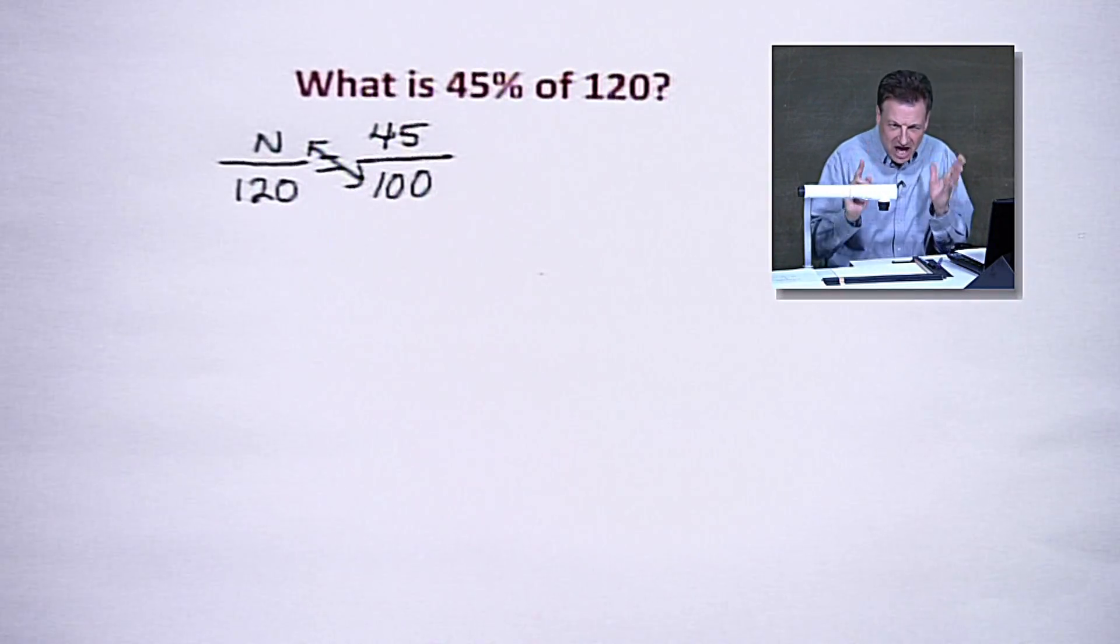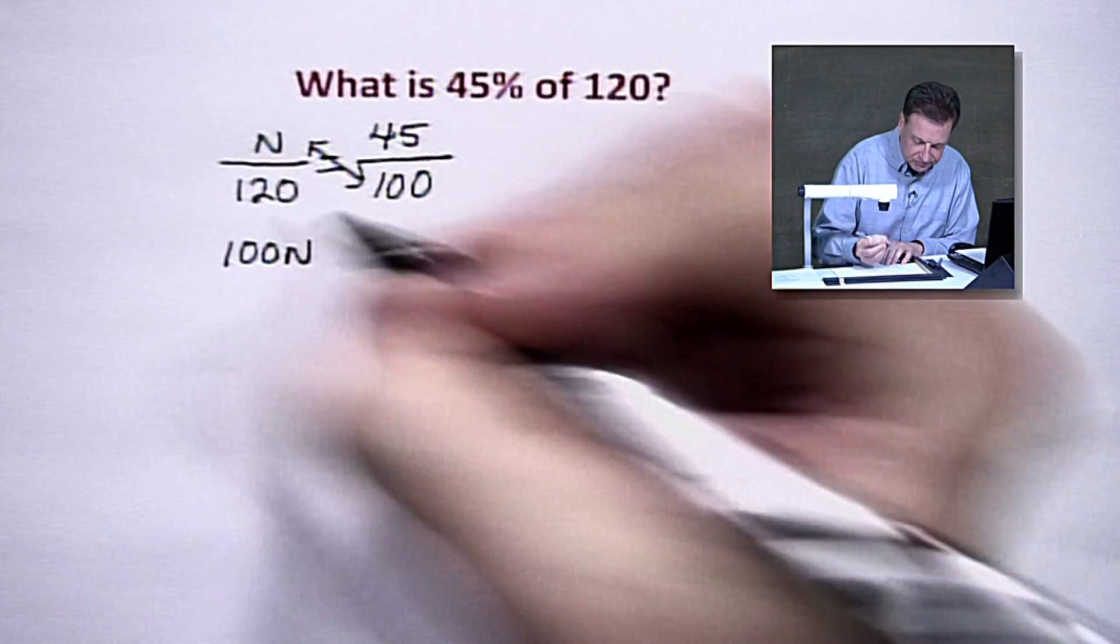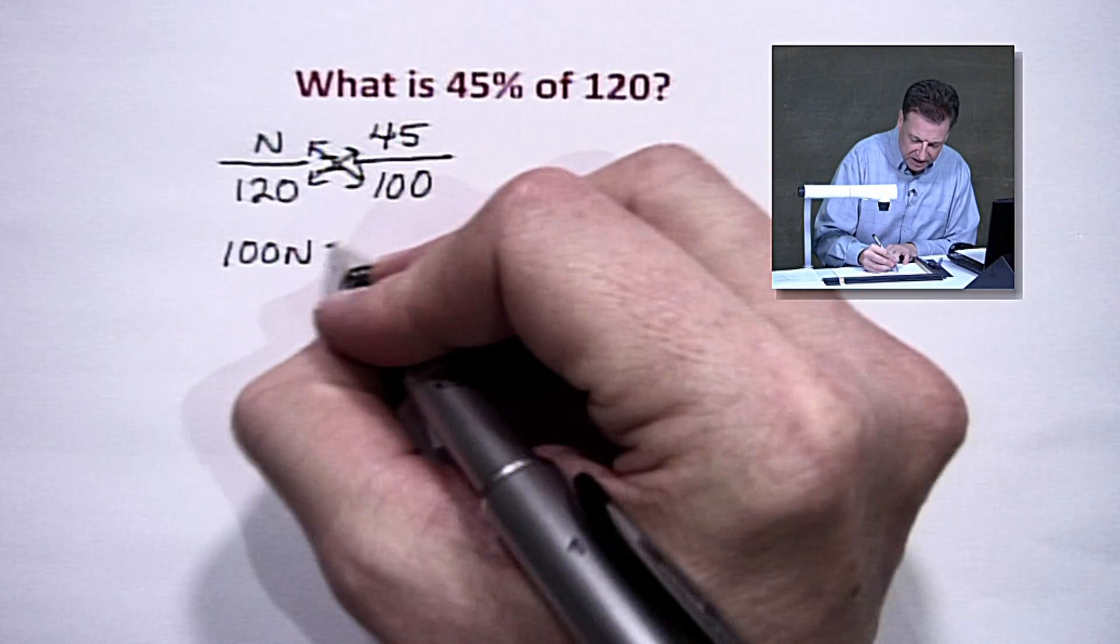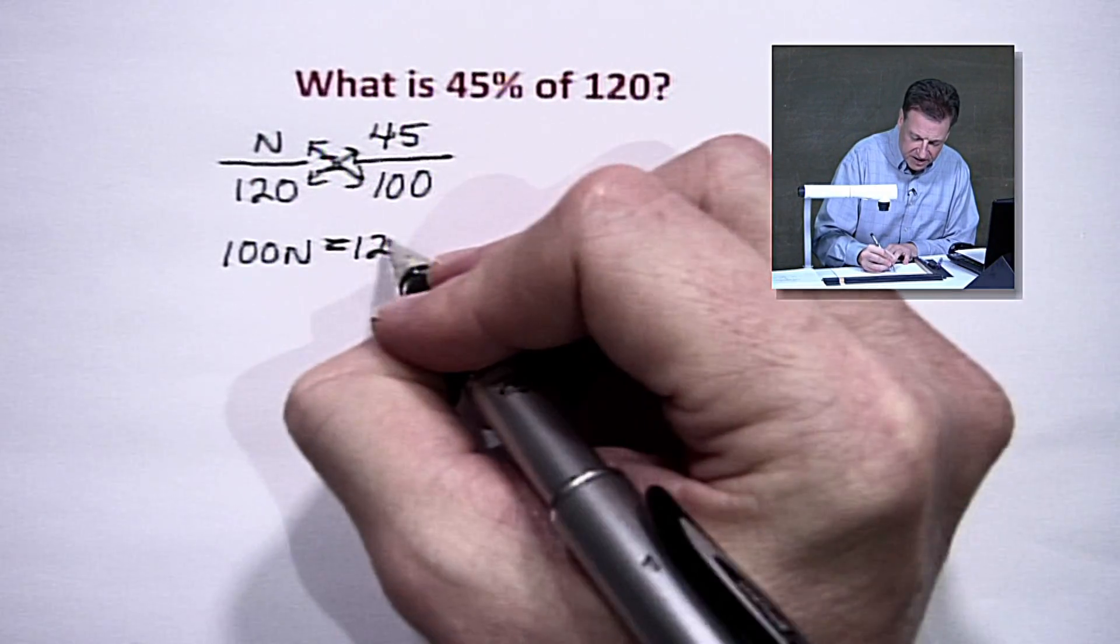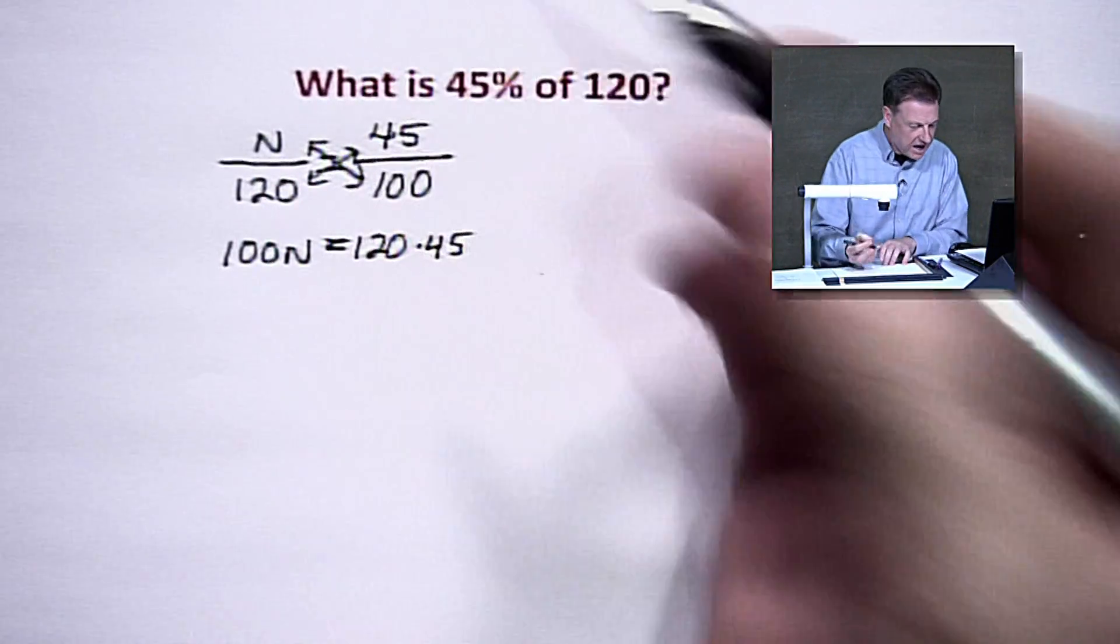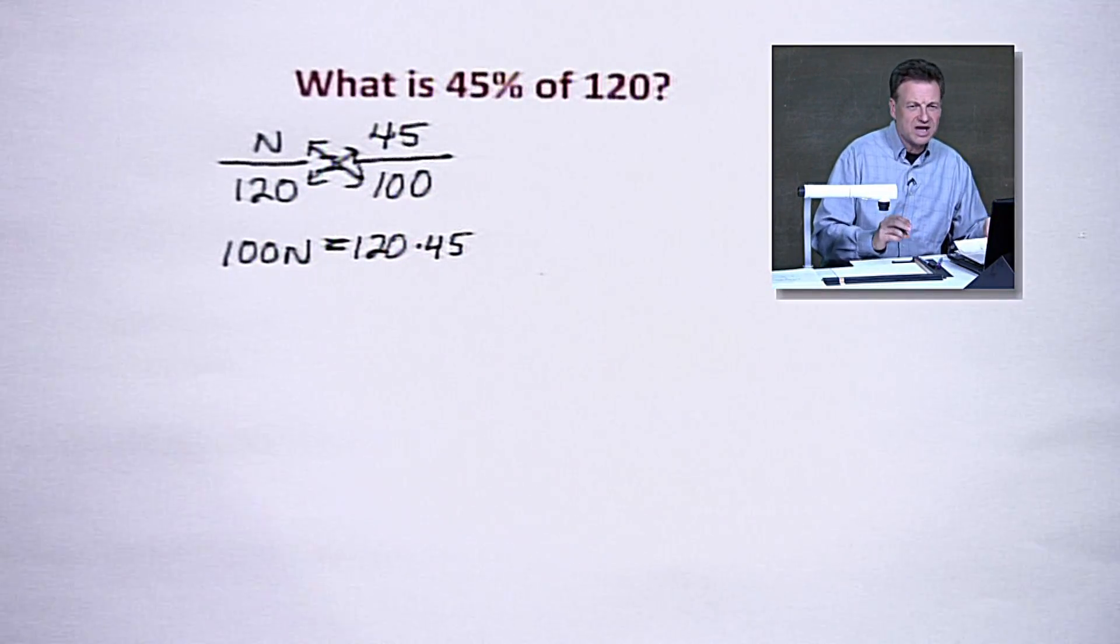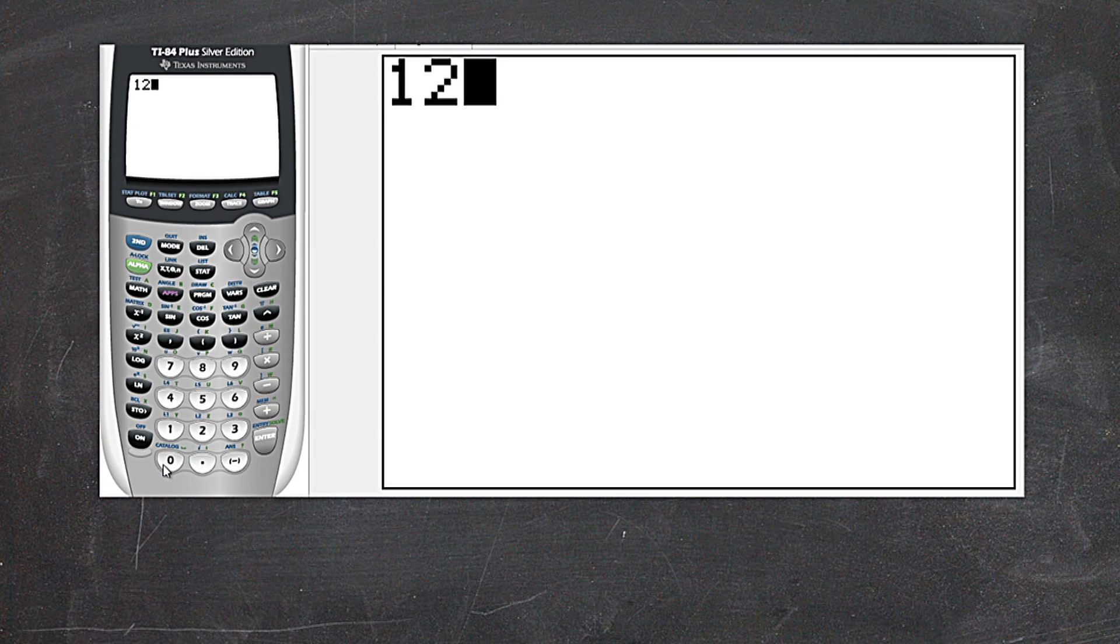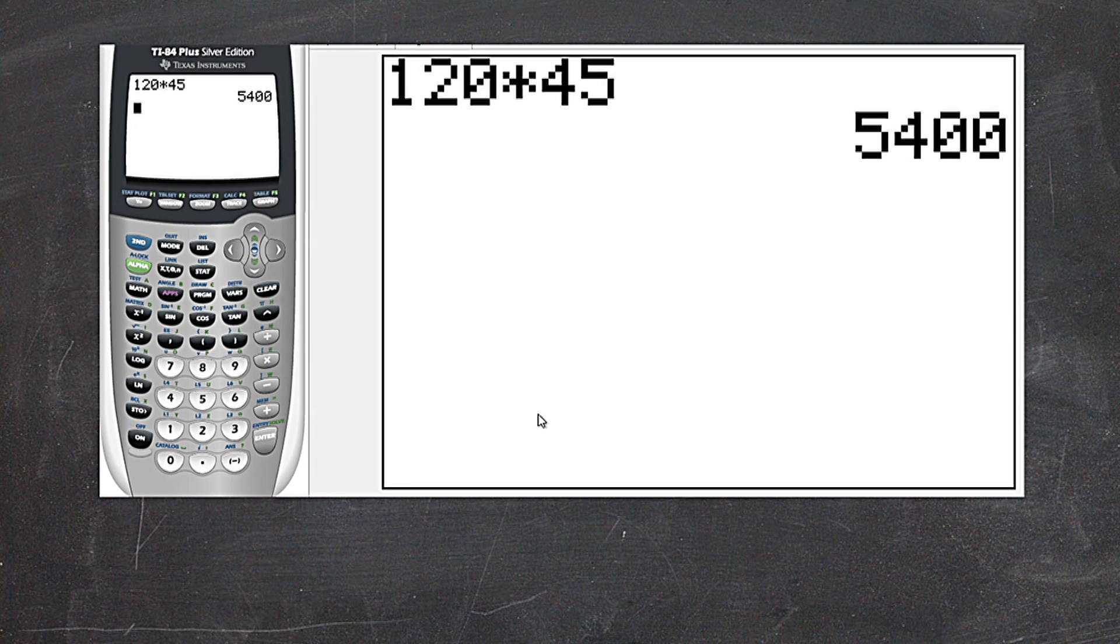We're going to multiply the 100 times N. And it's going to give us just that, 100N. Nothing magical there. And on the other side, we're going to multiply 120 times that 45. Let's go with my calculator just a second. Let's see what we get on that. Save us a little bit of time. 120 times the 45. This is where the calculator really does come in handy. It just saves us a little bit of arithmetic time. We do come up with 5,400.